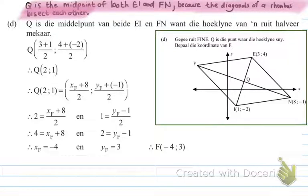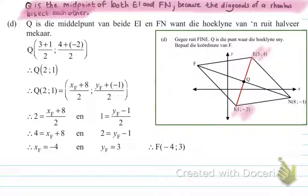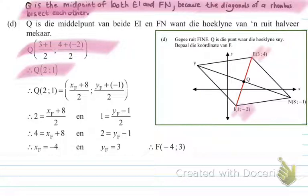First I go to line EI and find its midpoint to find Q. Adding the x-values: (3 + 1) / 2, and the y-values: (4 + (-2)) / 2. That gives Q = (2, 1).